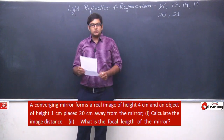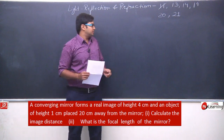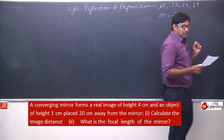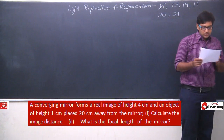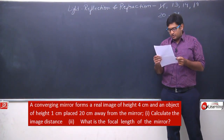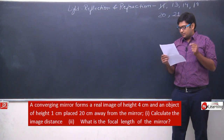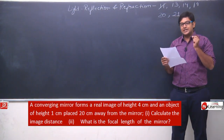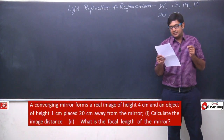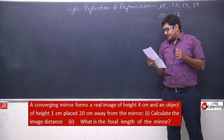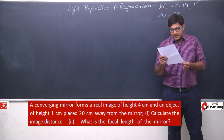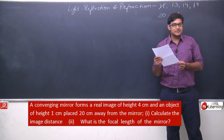Now let us discuss question number 13. Let us read this question. A converging mirror forms a real image of height 4 centimeters, and an object of height 1 centimeter is placed 20 centimeters away from the mirror. Calculate the image distance.